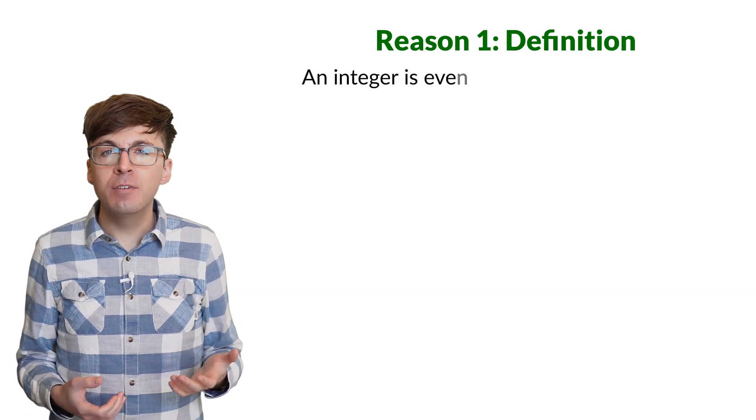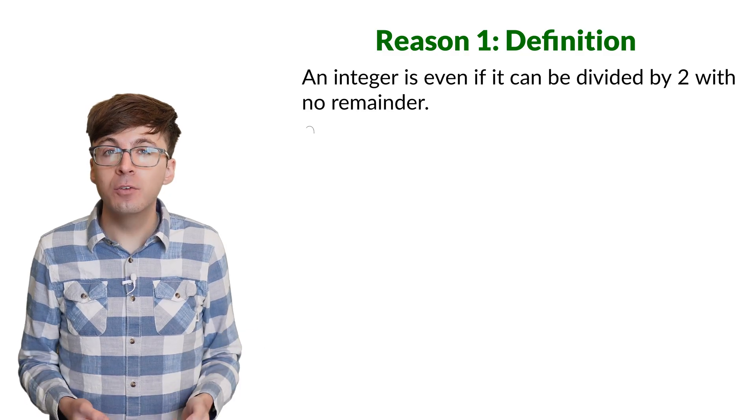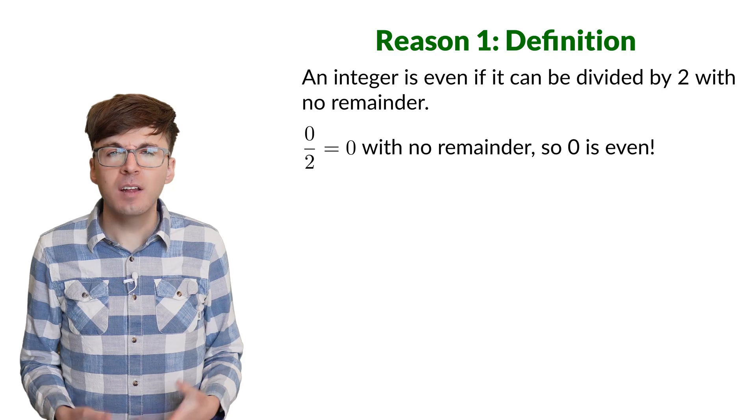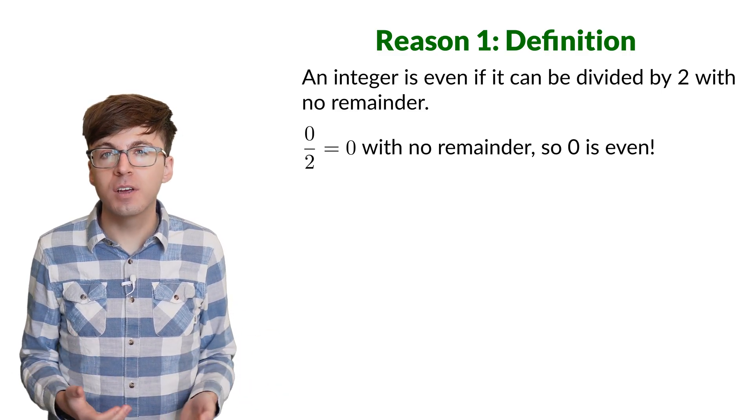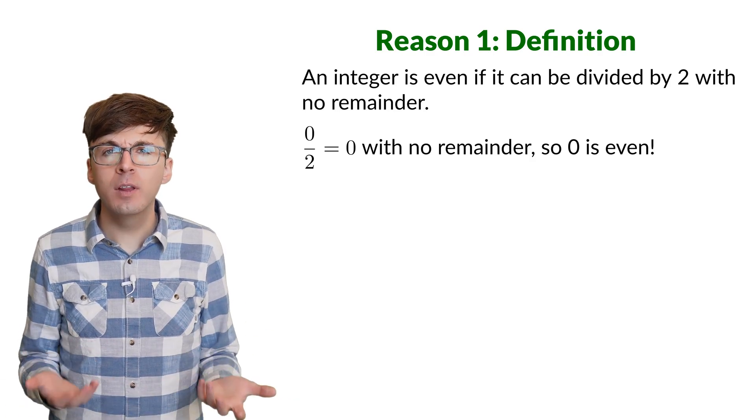Reason 1. An integer is even if it can be divided by two with no remainder. Zero divided by two is zero with no remainder, so zero is even. That's pretty much the proof. But ultimately, we can decide what we want our definition of even to be. So let's explore why we really want zero to be even.